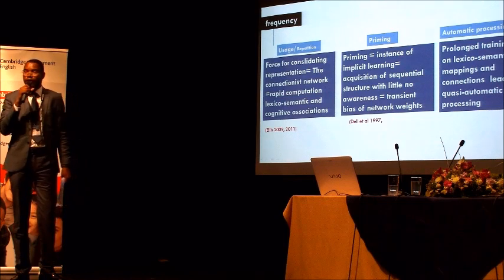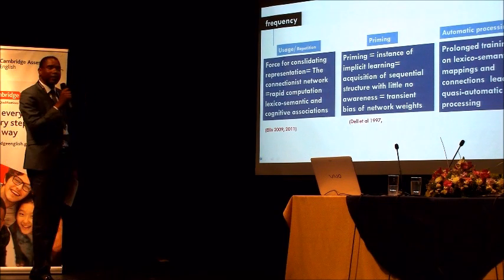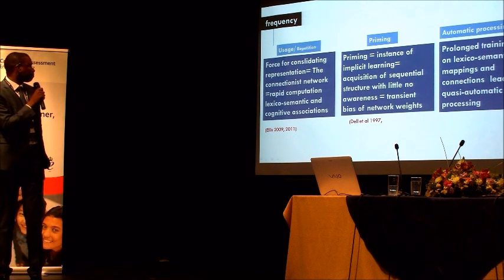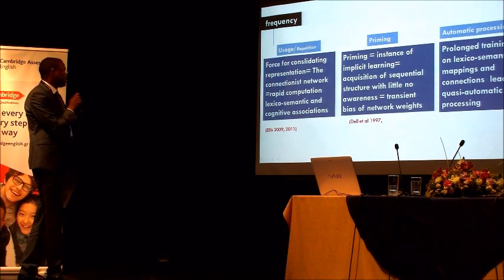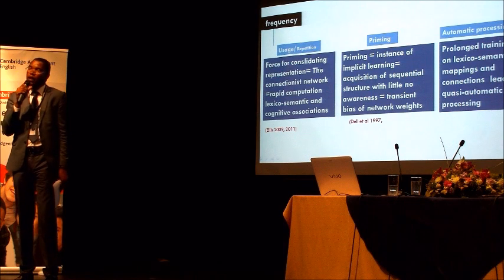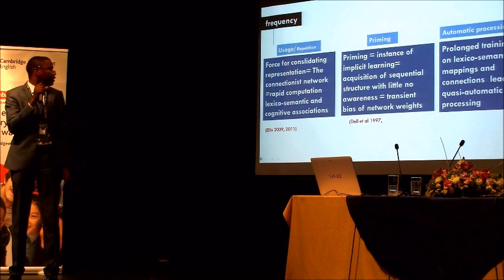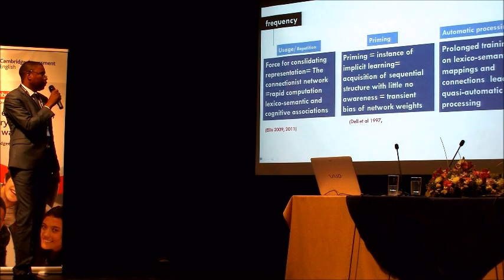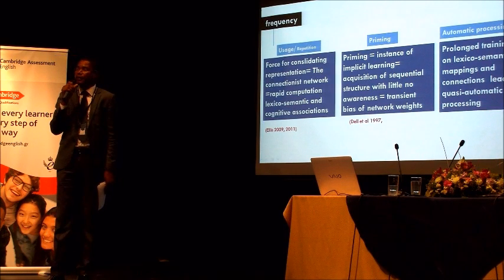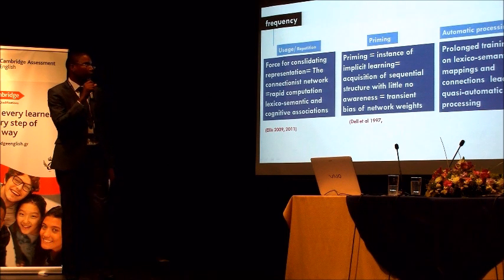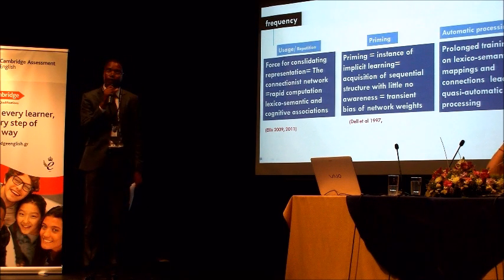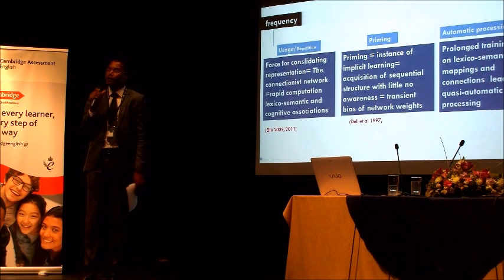The third point is gradients or frequency. Usage is of vital importance — it is a form for consolidating the representations of linguistic forms. The connectionist network can rapidly compute lexical, semantic, and cognitive connections. This involves priming, which is an instance of implicit learning. All this leads to automatic processing by the network — a lot of training on lexical semantic mappings and connections leads to automatic processing by the network.